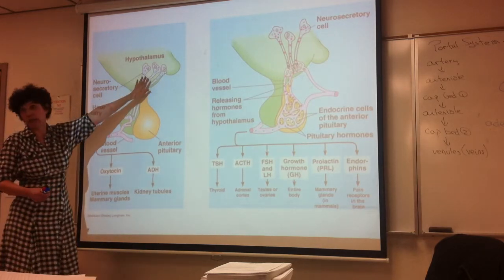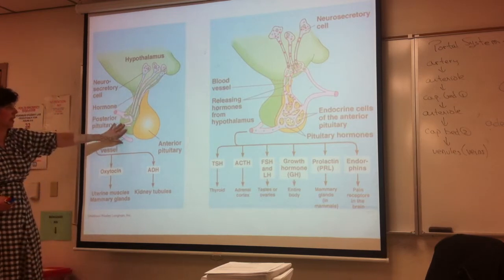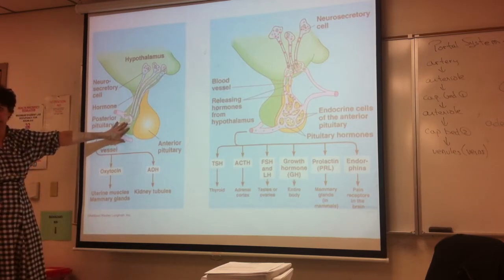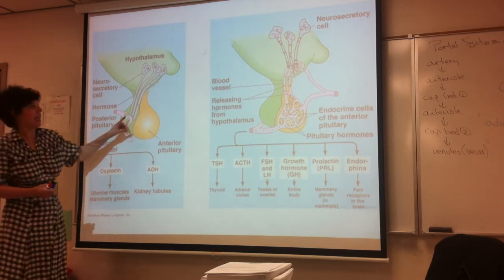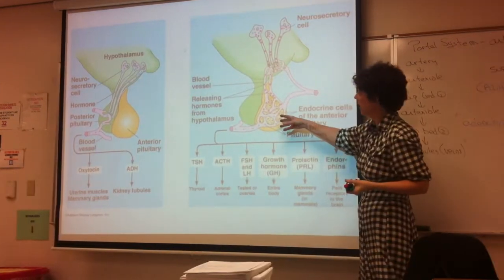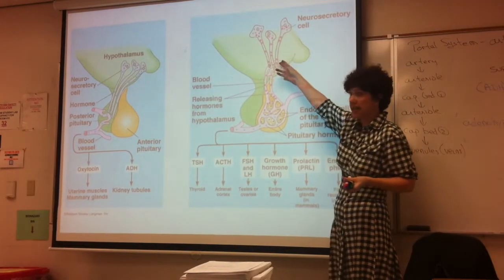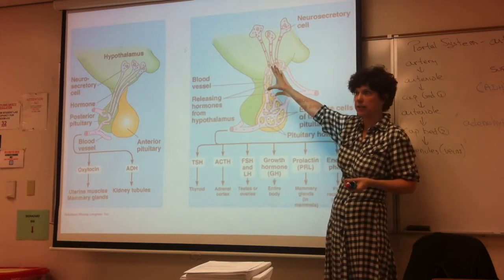Here would be the supraoptic and paraventricular nuclei, sending their axons down to posterior pituitary. These are part of the pallium. Then over here is the anterior pituitary, and notice it is associated with the hypothalamus. That's what we're going to look at next.